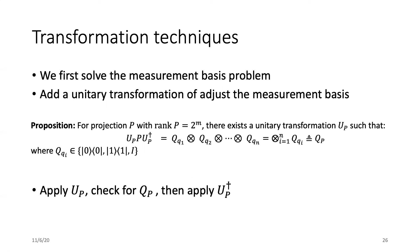We propose three transformation techniques to resolve these constraints. We first solve the measurement basis problem. We can add a unitary transformation to adjust the measurement basis to the computational basis. And we have the following proposition. When the rank of the projection is 2 to the power of an integer, we can diagonalize it to find a new projection. And in this new projection, the measurement is on the computational basis, and the required transformation can also be naturally derived during the matrix diagonalization. The execution of the assertion will be first run this new unitary U_P and checking for the new projection Q, and then apply the U_P dagger to rotate things back.